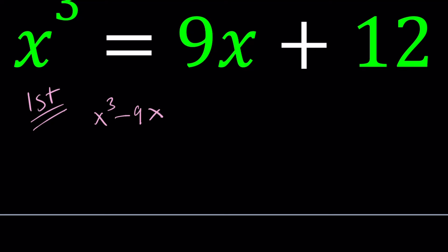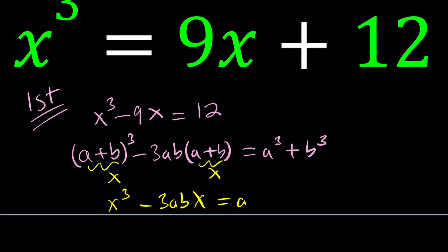Let's put the 9x on the left and isolate the constant. We want to make this equation look like the following: (a+b)³ - 3ab(a+b) = a³ + b³. This is the identity we're going to use. Notice that if I call a plus b equal to x, then my equation becomes x³ - 3abx = a³ + b³. So one of the solutions to this equation is going to be x equals a plus b.